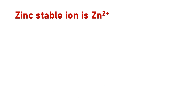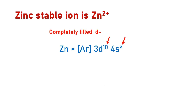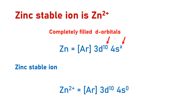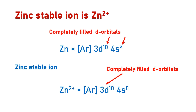On the other hand, zinc metal has a completely filled D subshell. The stable ion it can form is a zinc-2 ion, which also has a completely filled D subshell. That is why we don't consider zinc to be a transition element as well.